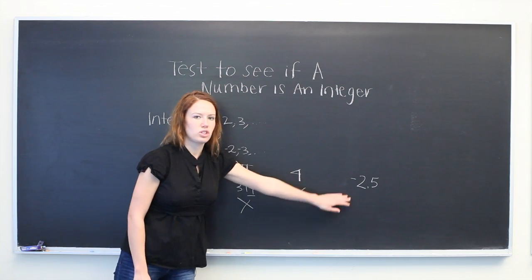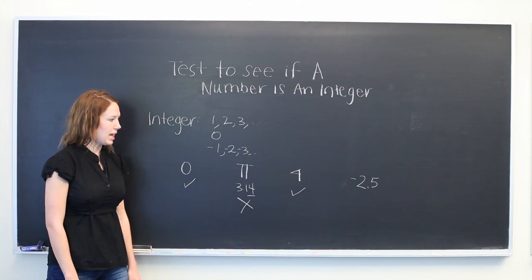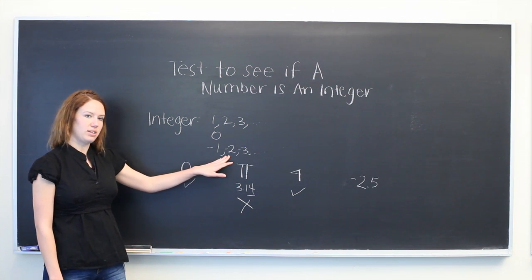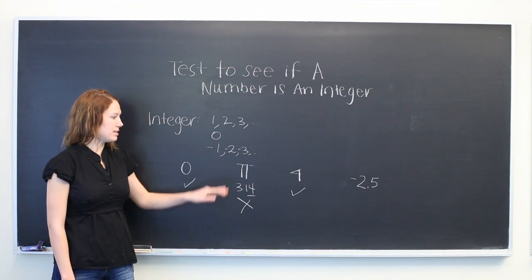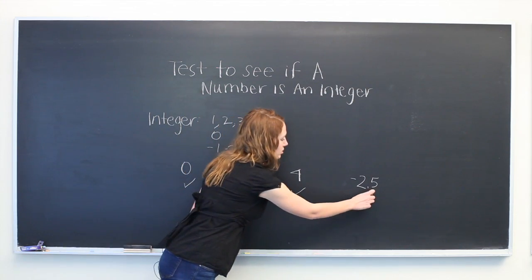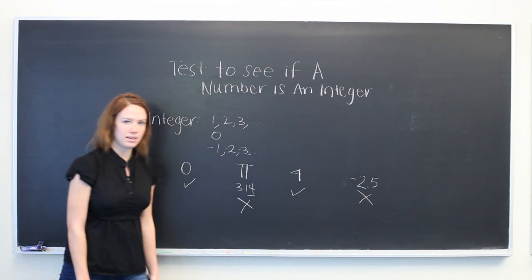And now we see minus 2.5. And if it were just minus 2, we could consider it an integer, but because it's got a decimal, the 0.5, we actually can't include this as an integer.